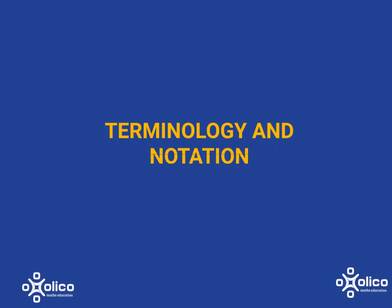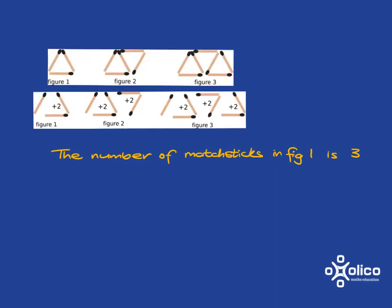We're going to look at some terminology and notation, which will make it easier for us to talk about patterns. So if we look at this matchstick pattern that we have looked at previously, and I want to talk about this pattern. So I'm going to be writing a lot of things like the number of matchsticks in figure 1 is 3. And if I'm going to have to write out that whole long thing each time, it's going to take me a lot of time. So I want to find a quicker way to write that.